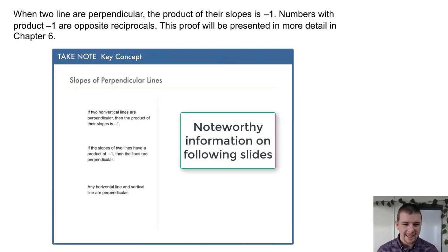When two lines are perpendicular, the product of their slopes is negative 1. Numbers with product negative 1 are called opposite reciprocals. This proof will be presented in more detail in Chapter 6.